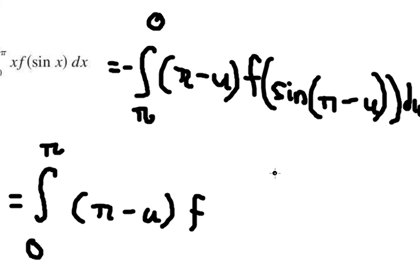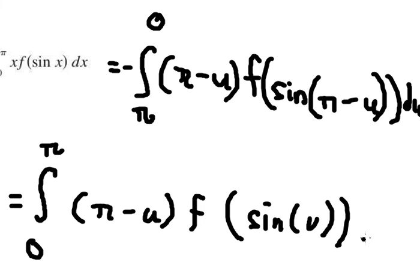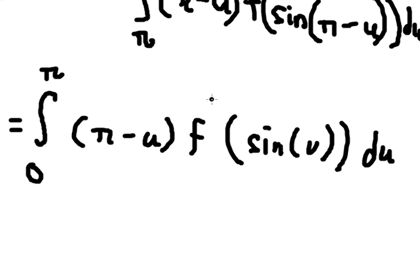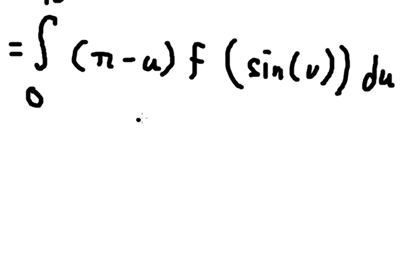This one we can change into sin of u, because this is the transformation of trigonometry: sin of π minus u equals to sin u. Next we have u, and u we need to change back to x.